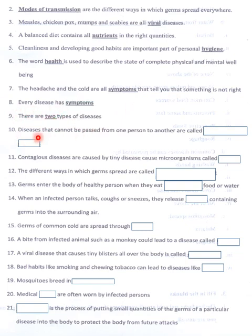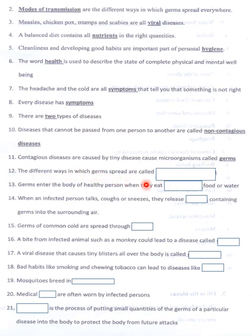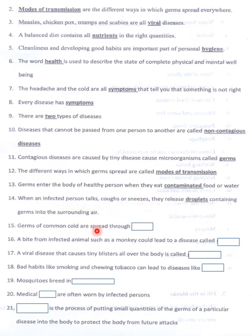There are two types of diseases. Diseases that cannot be passed from one person to another are called non-contagious diseases. Contagious diseases are caused by tiny microorganisms called germs. The different ways in which germs are spread are called modes of transmission. Germs enter the body when a person eats contaminated food or water. When an infected person talks, coughs or sneezes, they release droplets containing germs. Germs of the common cold are spread through air. A bite from an infected animal such as a monkey could lead to a disease called rabies. A viral disease that causes tiny blisters all over the body is called chicken pox.